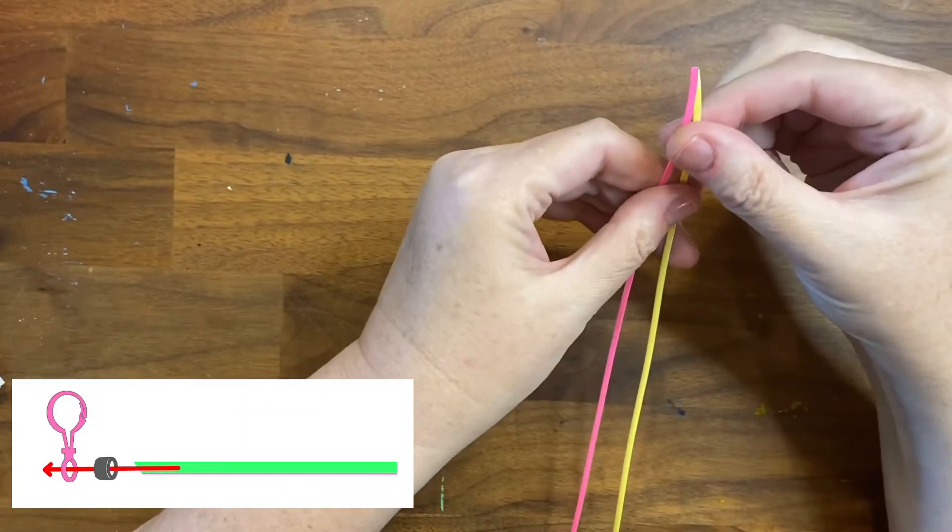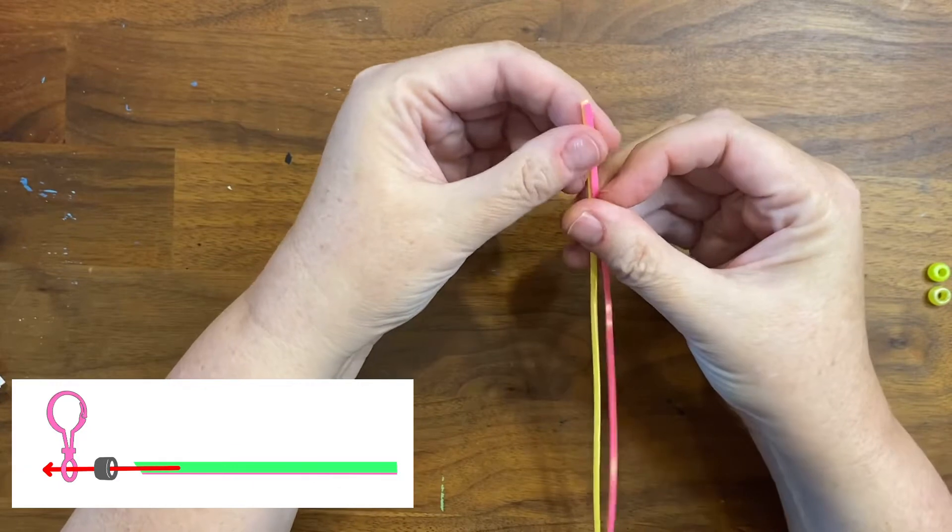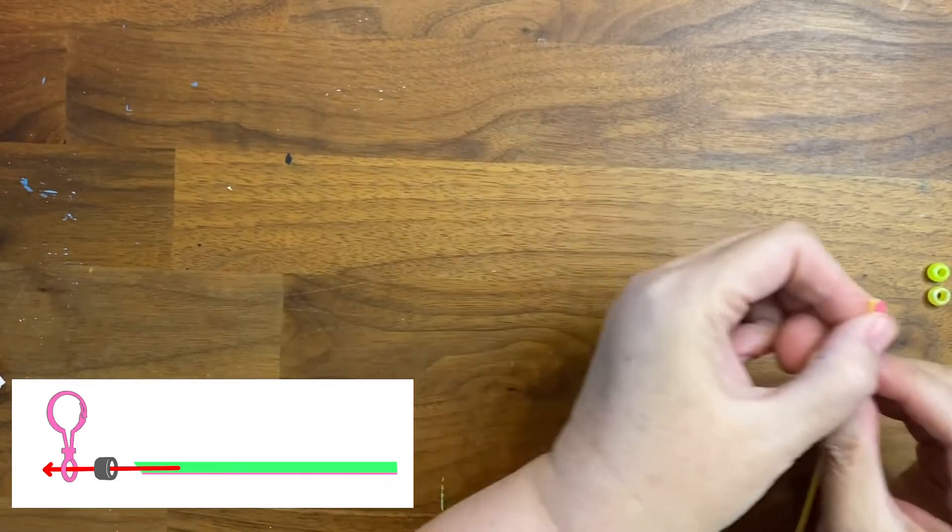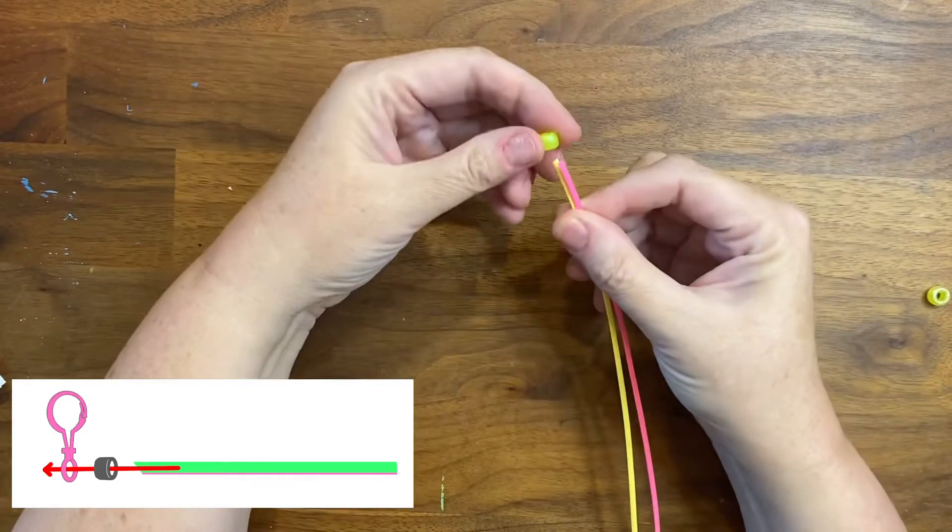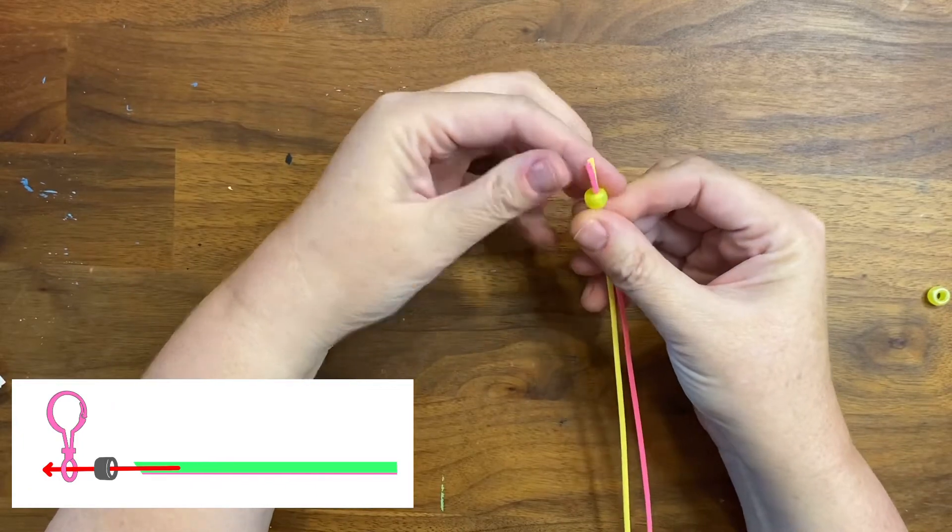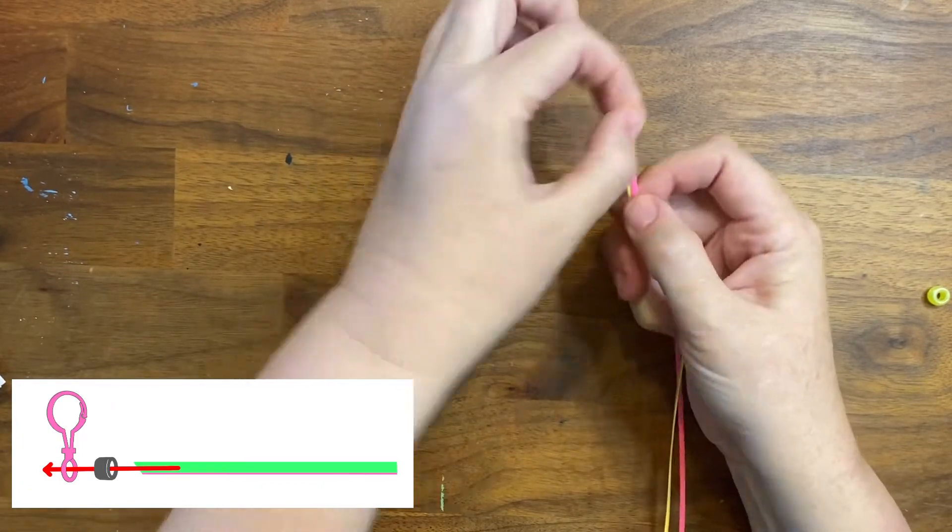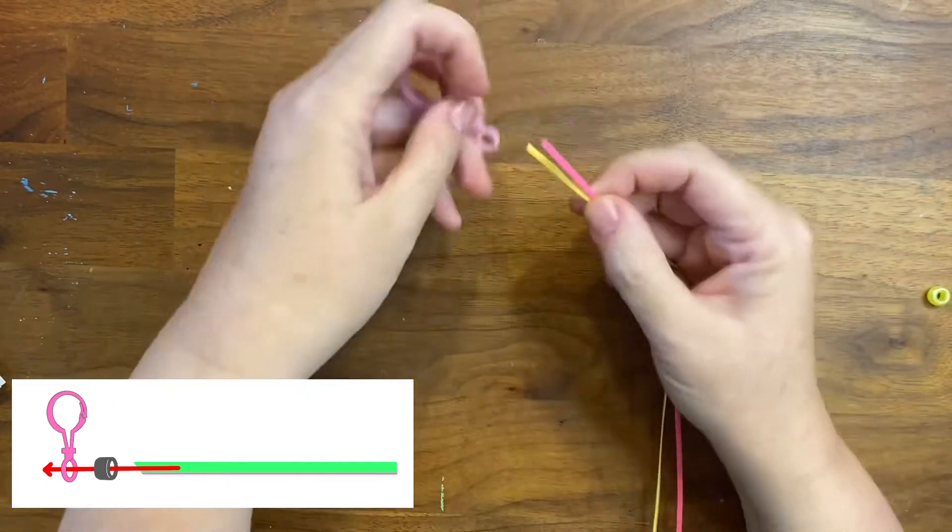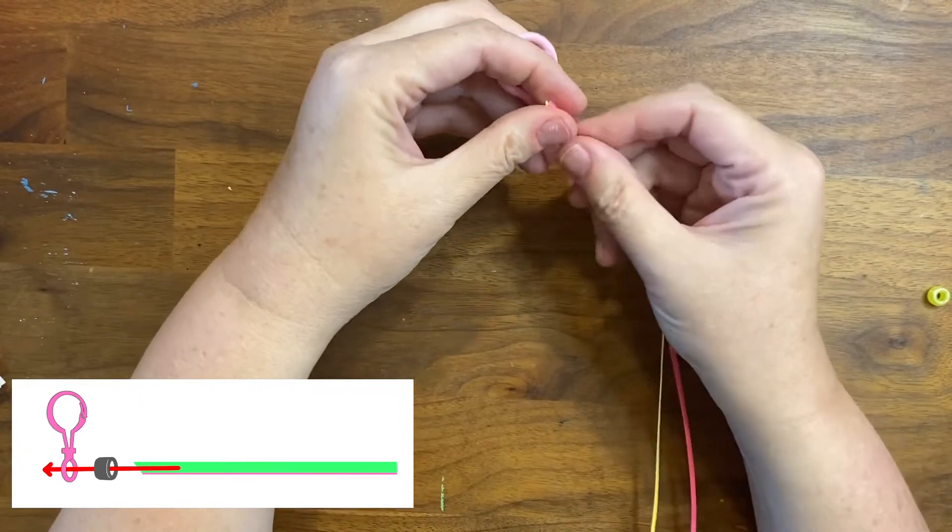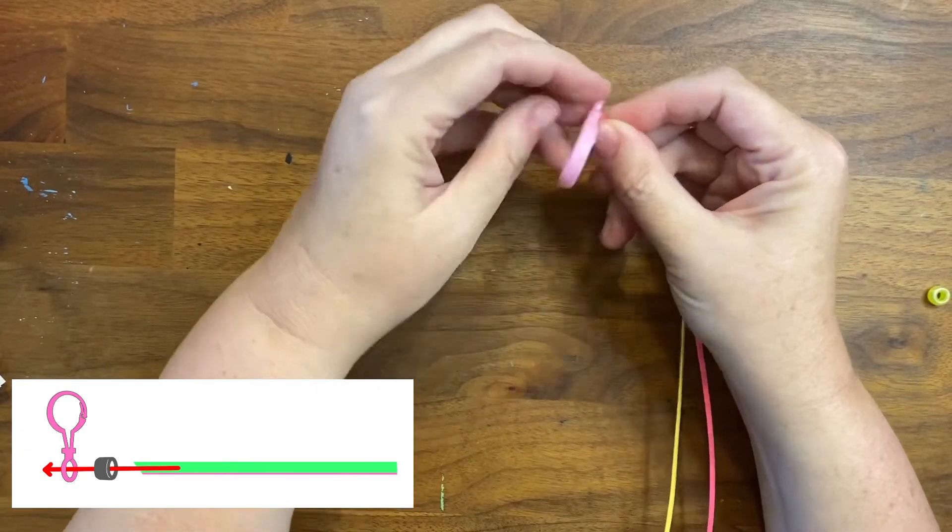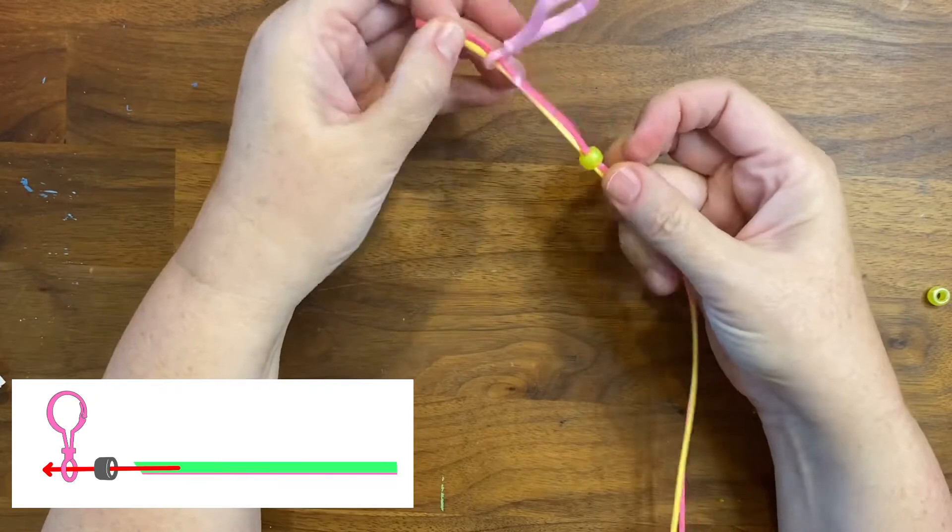The first thing you'll do is to stack your strands of Scooby together where the ends are matched up. Feed the tails through one bead and then through the hole on your clip. You'll want to slide the bead and the clip down about three inches from the top.